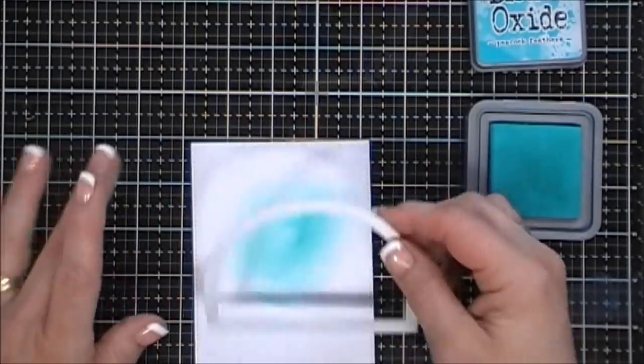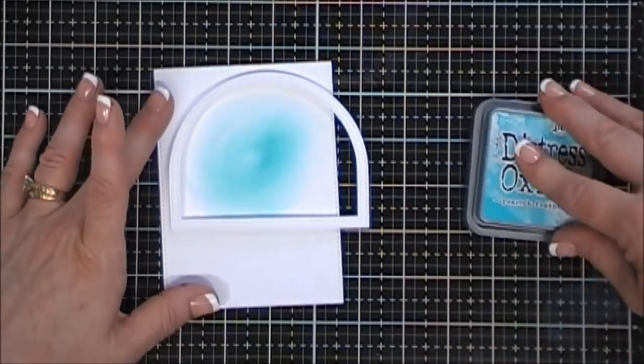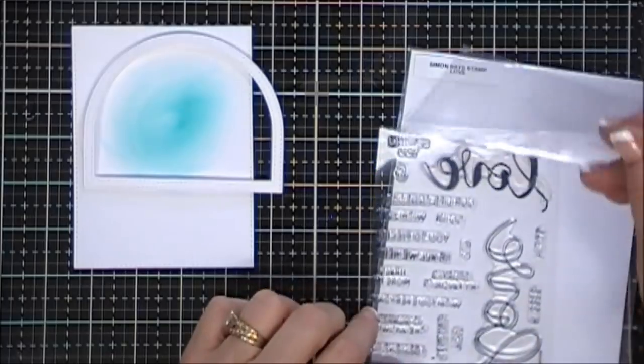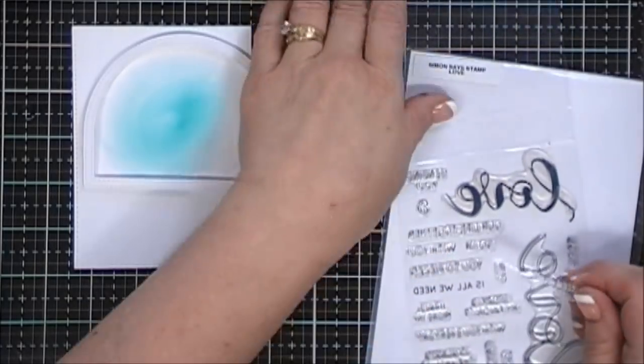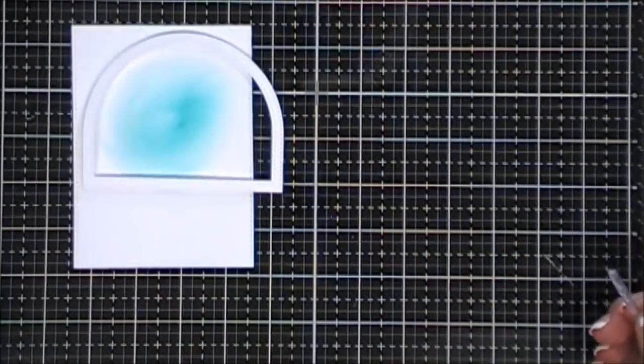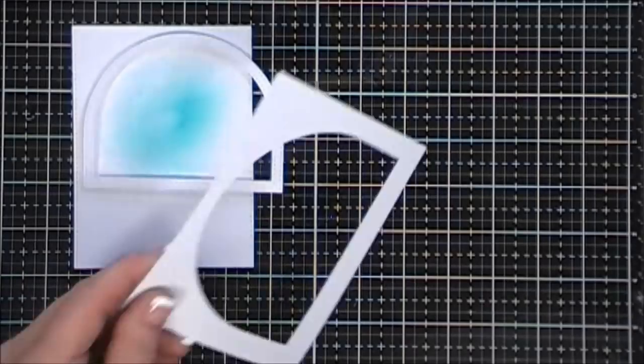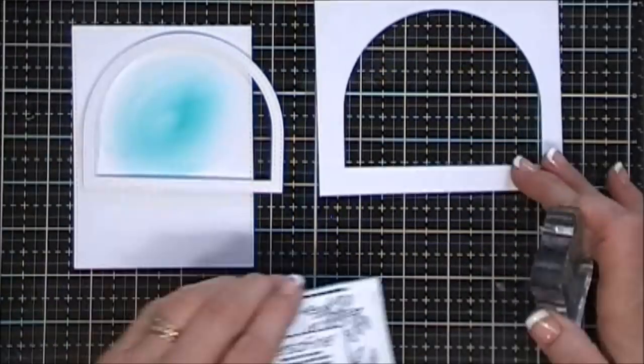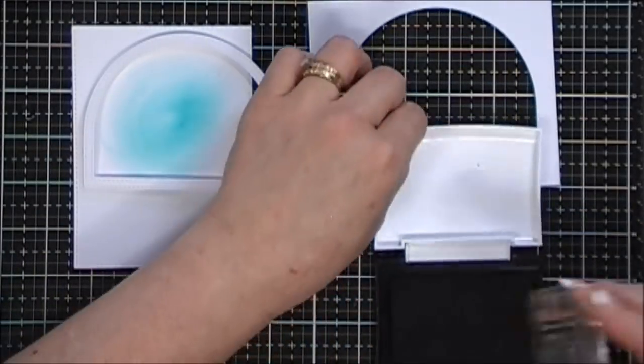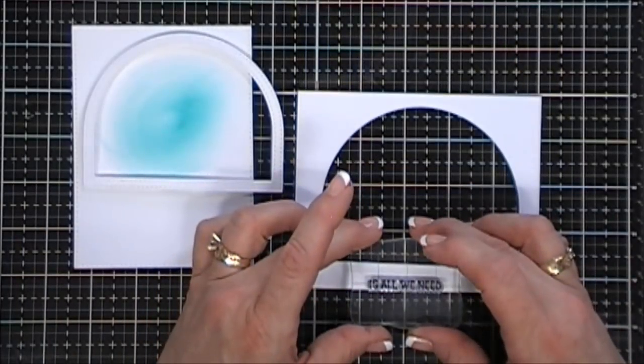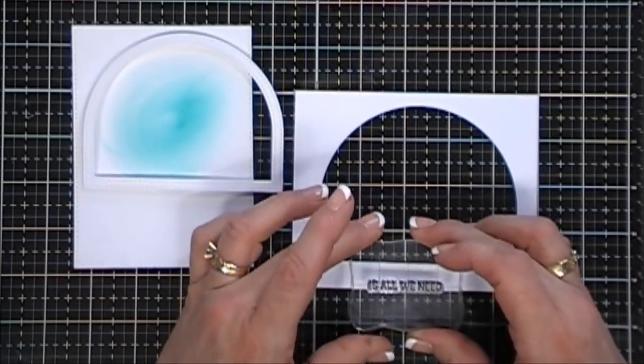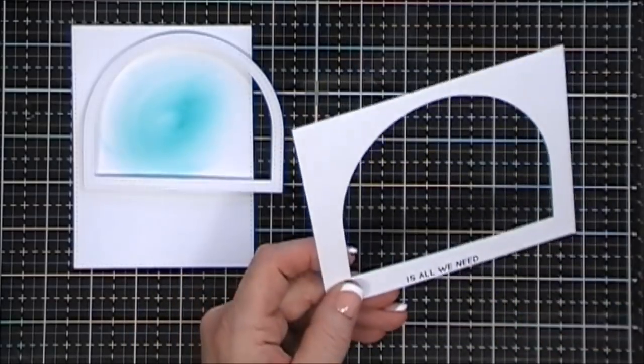I wasn't worried too much about blending it out too well because most of it's going to be covered. She doesn't have a sentiment, so I grabbed one from my stash that says 'is all we need.' That's the second part of my sentiment. I'm going to stamp that with my VersaFine ink and then just use my scissors to block off that sentiment.